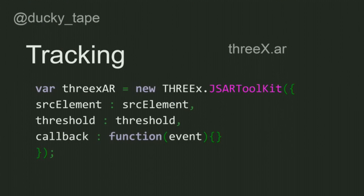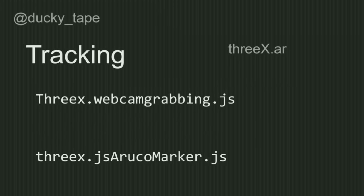Some other tracking stuff: the three.xr.AR thing — this is basically how you use it. You get the source element, which is your camera video or canvas, then you tell it the threshold of what you want to track, and then you get an event to tell it what to do when that happens. It also grabs your webcam for you and handles all the video grabbing and gets all the positions in 3D if you want to put 3D objects over that.